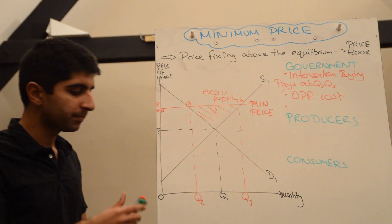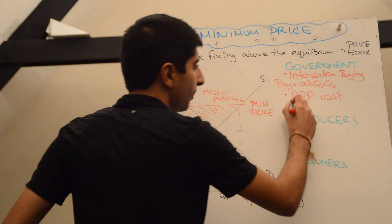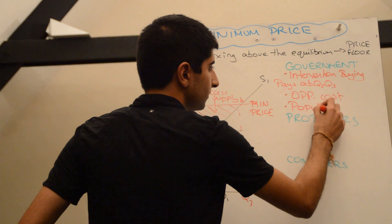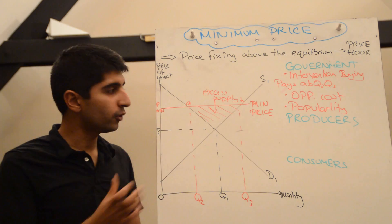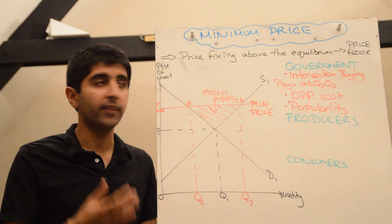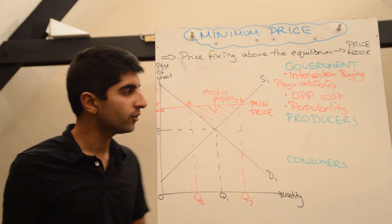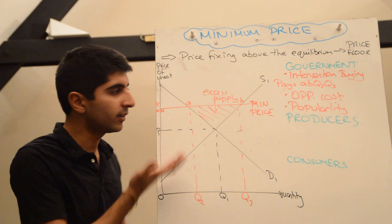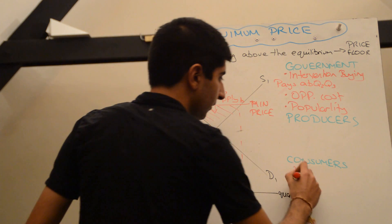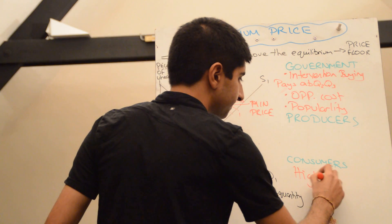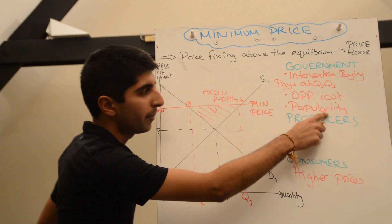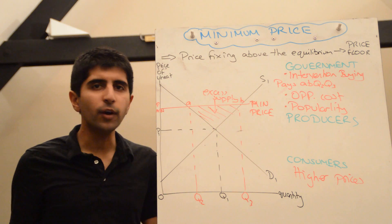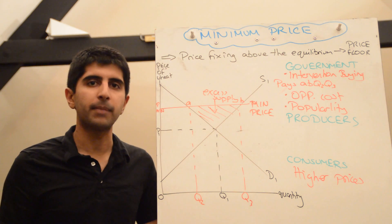So two issues there for the government. And the final issue, they have to consider its popularity. So on the one hand, producers will love this because they gain a higher price and they gain higher incomes, higher revenues. But consumers will not like it because they have to pay higher prices. And that can impact on government popularity. Governments are vying for votes at the end of the day. So we need to consider that impact too.